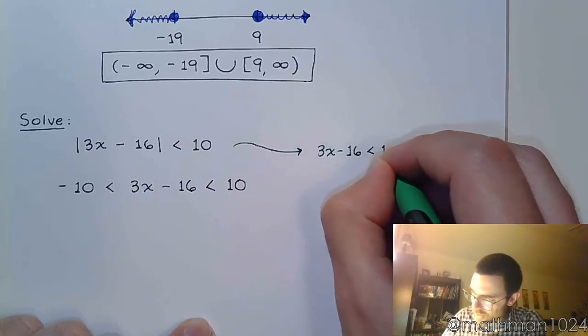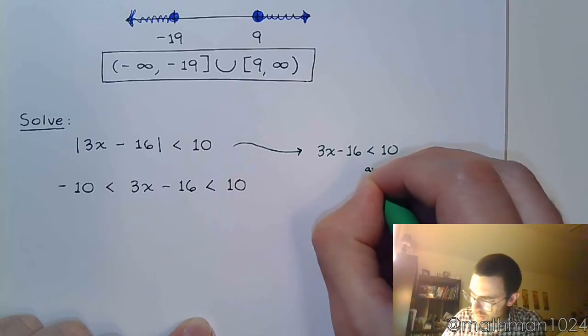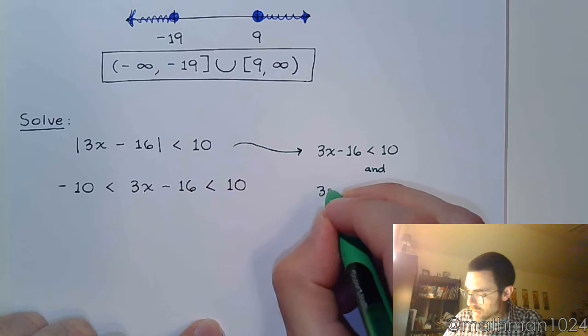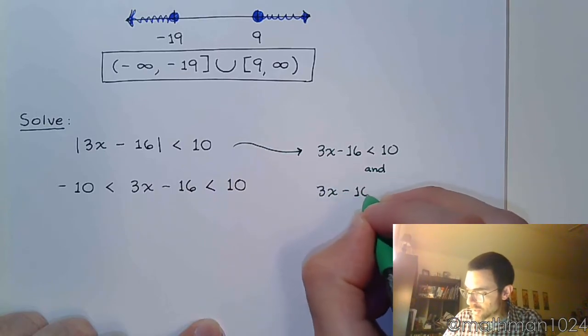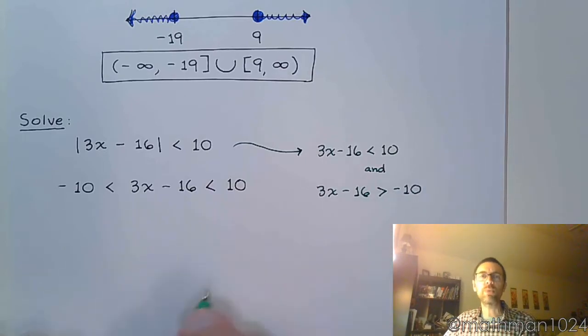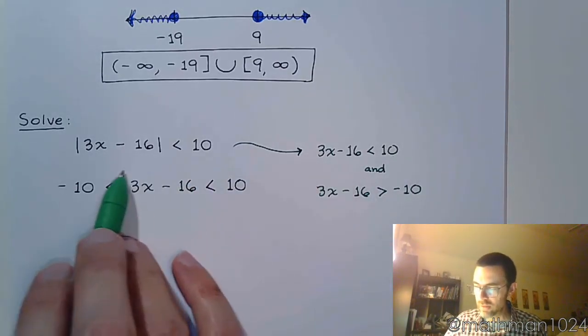But you may also say that 3x minus 16 is less than 10 and, because you have to do an intersection, 3x minus 16 is going to be greater than negative 10. So you could separate this into two different inequalities, but these two inequalities are right here.